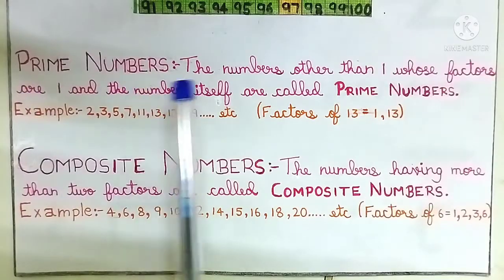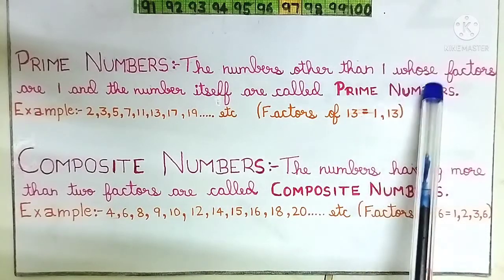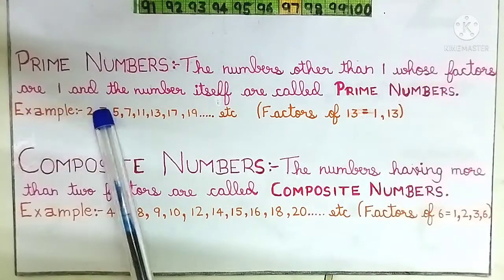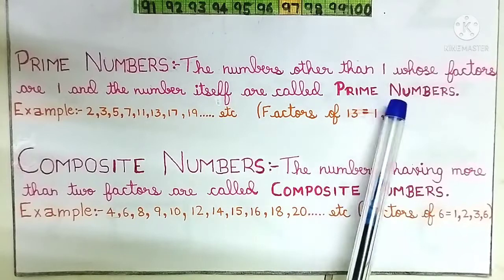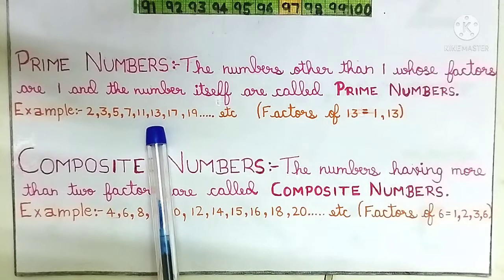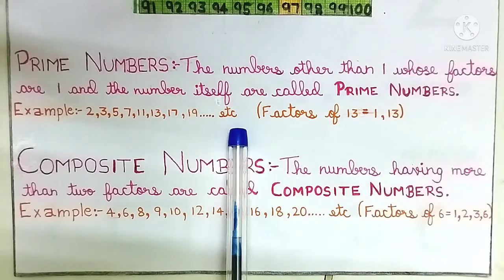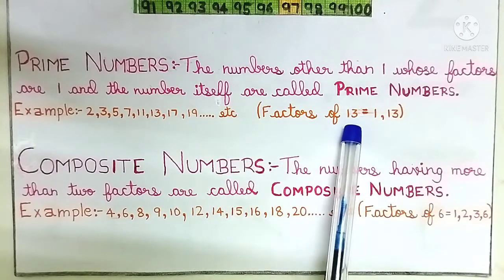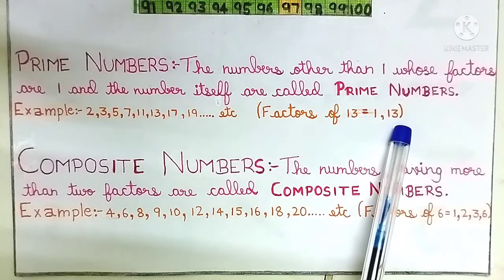Prime numbers: The numbers other than 1 whose factors are 1 and the number itself are called prime numbers. Example: 2, 3, 5, 7, 11, 13, 17, 19, etc. Factors of 13 equals 1, 13.